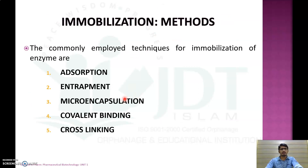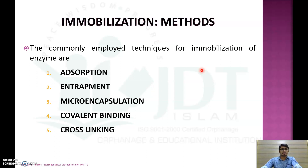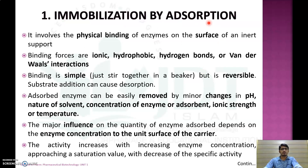What are the different methods of immobilization? Immobilization can be done by five different methods, classified based on the bond or binding between the enzyme and the carrier protein or inert support. The different methods are adsorption, entrapment, microencapsulation, covalent binding, and cross-linking.